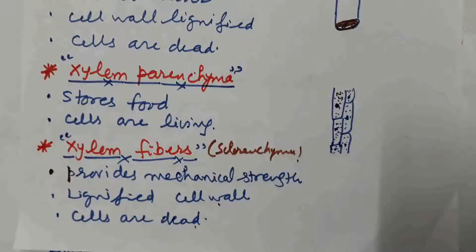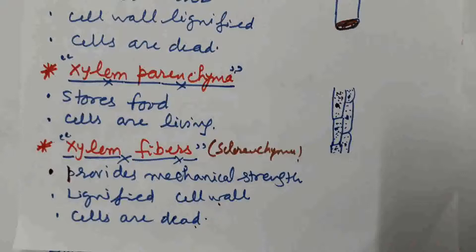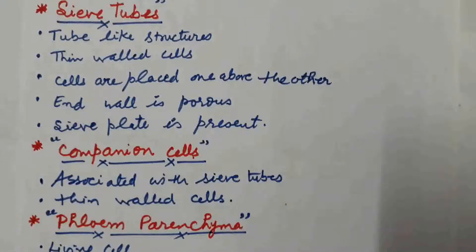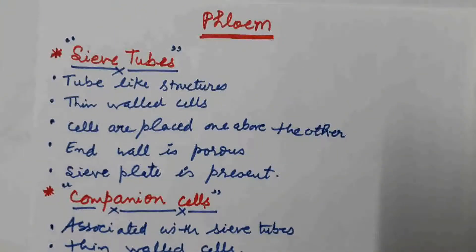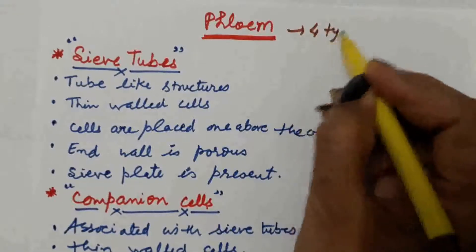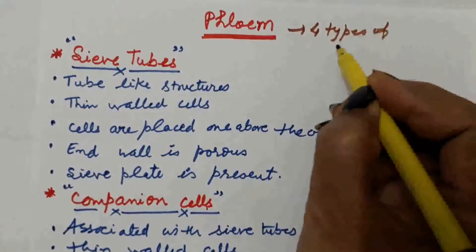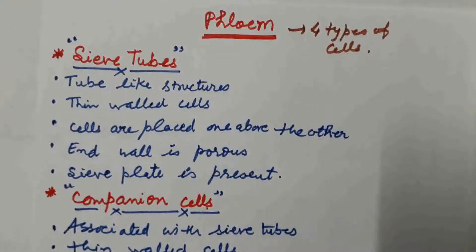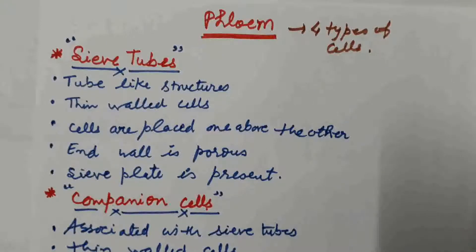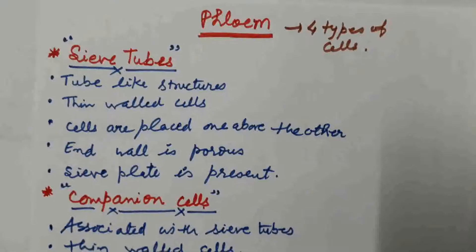This is all about xylem. The next type of complex permanent tissue is phloem. Phloem is also made up of four types of cells: sieve tube cells, companion cells, phloem parenchyma, and phloem sclerenchyma. First we will discuss the sieve tubes.